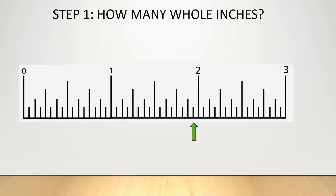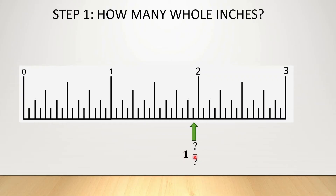So let's apply this by looking at a ruler. Suppose I asked you where is this green arrow pointed at in inches? Your very first step is to figure out how many whole inches this green arrow has passed. This green arrow has passed the 0 inch mark and it's passed the 1 inch mark, but it's not yet passed the 2 inch mark. So we're going to write 1 and something over something, meaning the green arrow has passed 1 whole inch and some number of fractions.